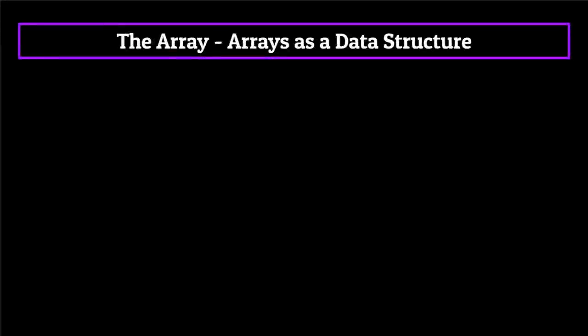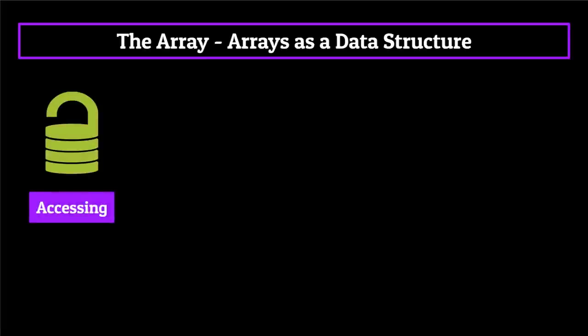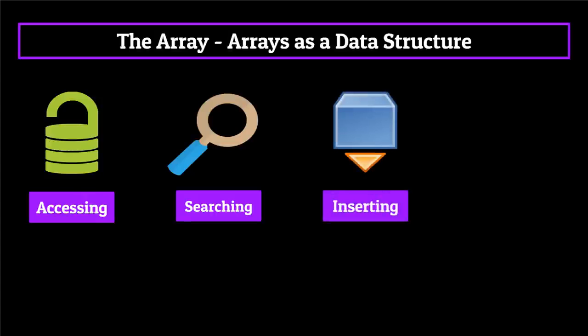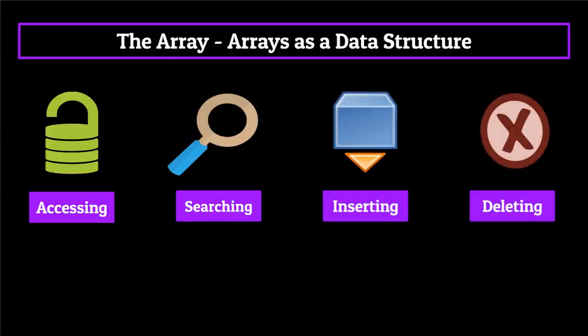That concludes the background information on arrays. Now that we know what they are, let's actually talk about arrays as a data structure. This is where we're finally going to be using our big O notation knowledge to judge the array as a data structure. We'll be going through the four criteria we talked about previously — accessing elements within an array, searching for an element within an array, inserting an element into an array, and deleting an element from an array — and scoring it based on how effectively it can complete these four tasks using time complexity equations.